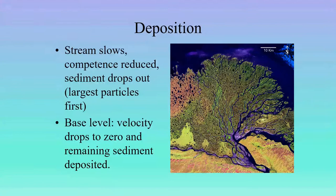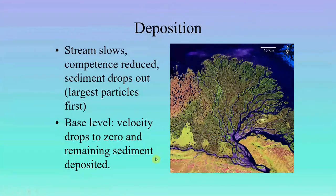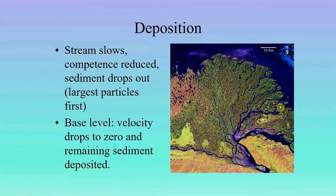When you hit base level for the stream — whether local base level or the ultimate base level in the case of a stream emptying directly into the ocean — you come out of that channelized stream and the water spreads out, velocity drops, energy drops, and sedimentation occurs. What you see here is a false color image — not this pretty if you fly over it — but this is the Mississippi River Delta, coming out into the Gulf of Mexico. Everything spreads out and we get lots of deposition, with what we call braided rivers.